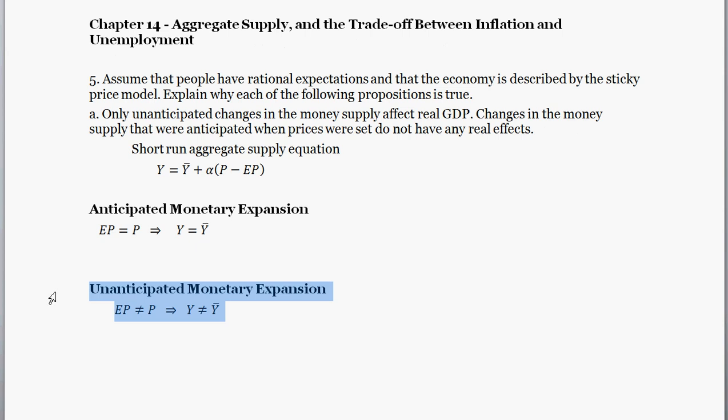However, with an unanticipated monetary expansion, when firms were setting expected prices, they were setting EP, they didn't know that the central bank was going to print a bunch of money. They didn't know that they were going to do the monetary expansion. So when they set EP, they didn't know that prices were going to increase. So in the unanticipated example case, EP does not equal the price level. And what does that mean, given our model here for the aggregate supply model? Well, if current prices are not in line with expected prices, then output, short run output, is not going to be in line with potential GDP.